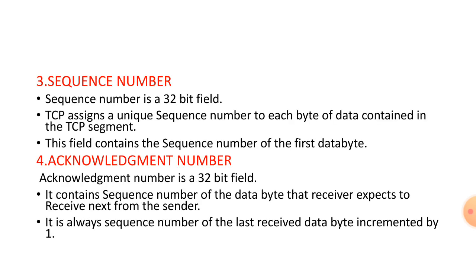Sequence number is a 32-bit field. It assigns the sequence number to the data. Acknowledgement number is a 32-bit field. It contains the sequence number of data that the receiver expects to receive next from the sender.